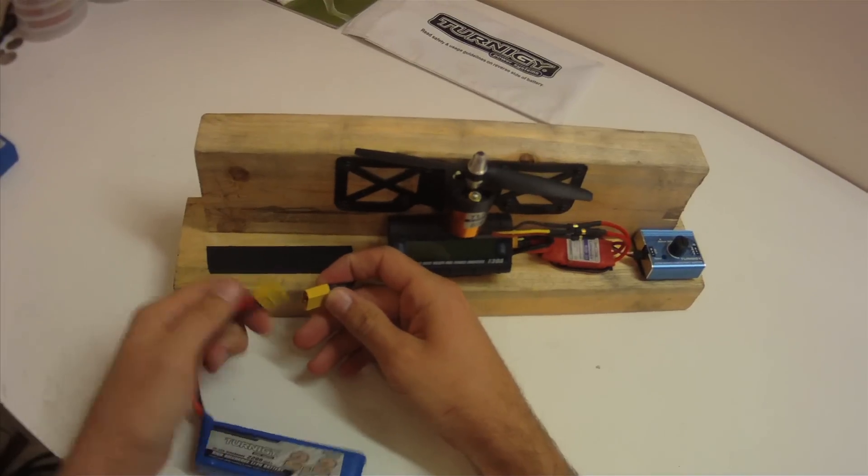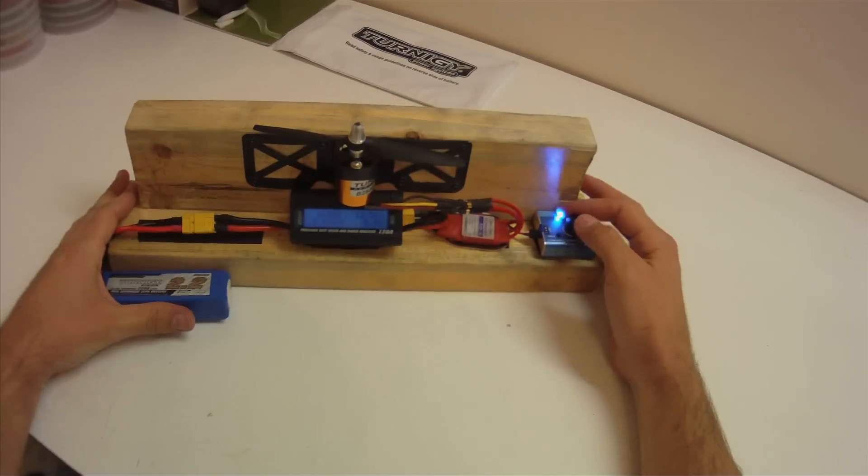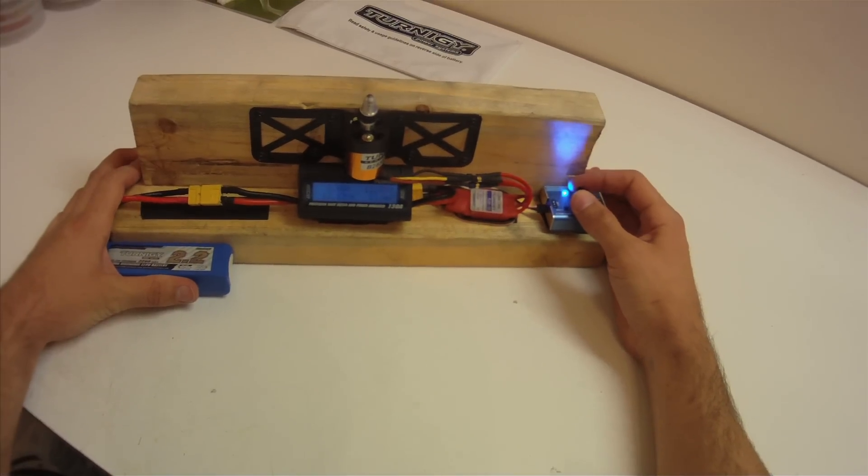So that was the 20C discharge, this is the same identical battery but a 25C discharge, probably a couple dollars more to get this battery. I want to see what kind of performance difference there is between them.